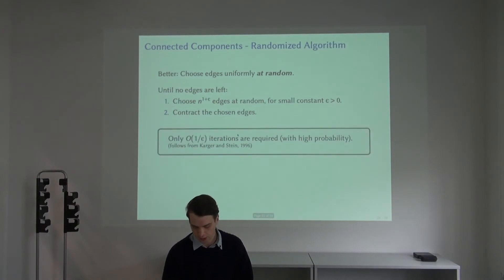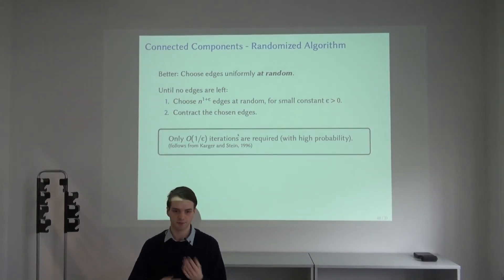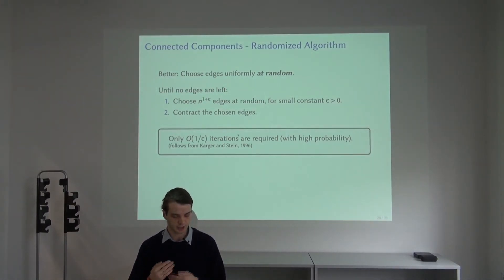To prove fast convergence, we use the result coming from minimum cuts. A similar algorithm was presented previously for minimum cuts, and the same kind of proof applies to this randomized procedure. We can show that only a constant number of iterations are required.